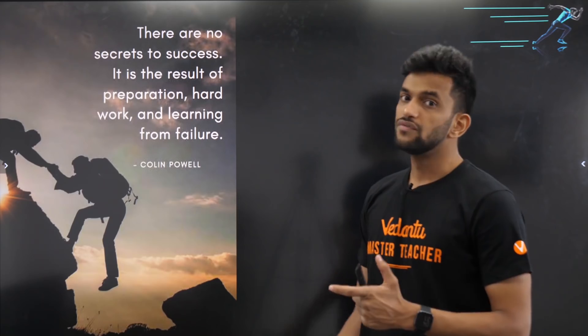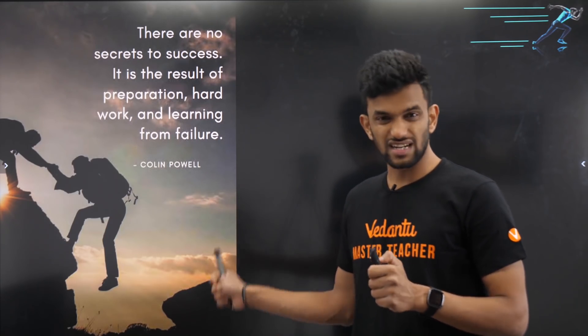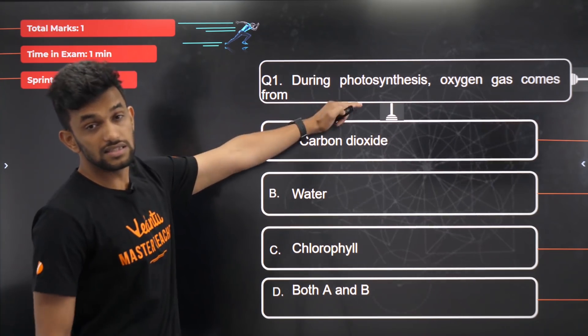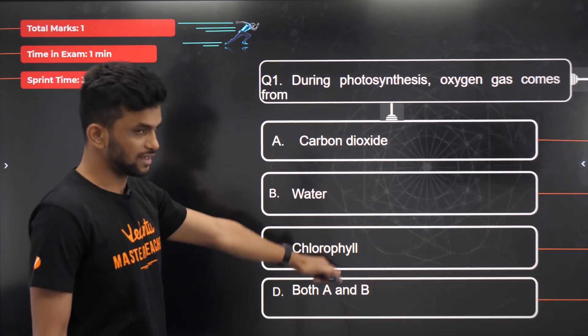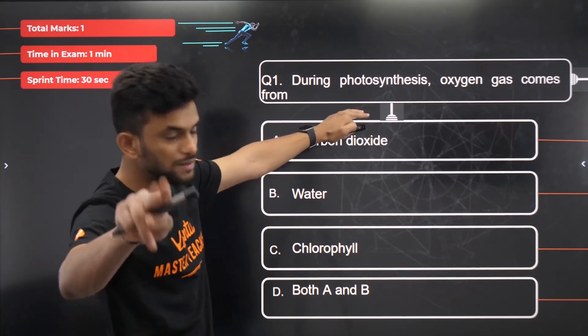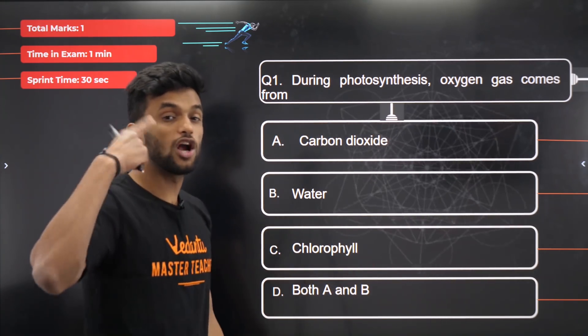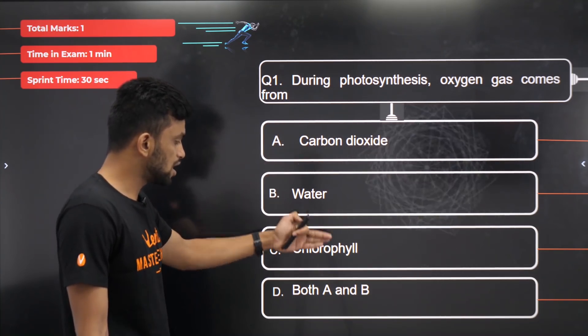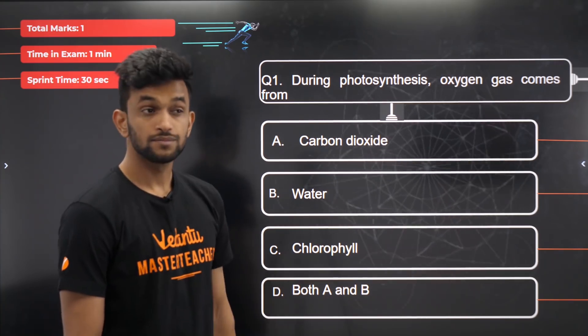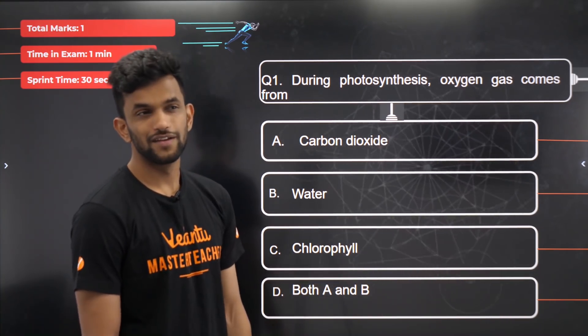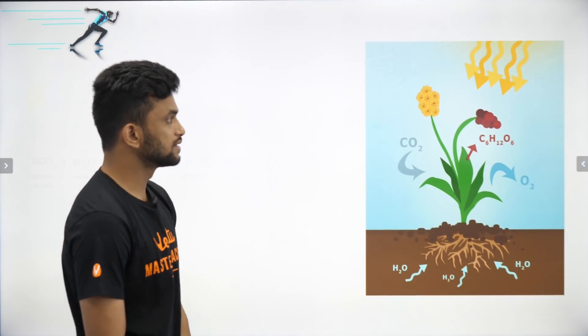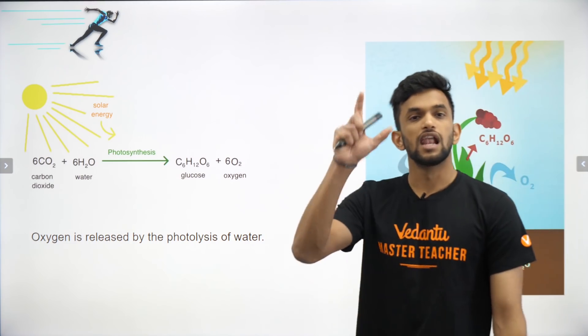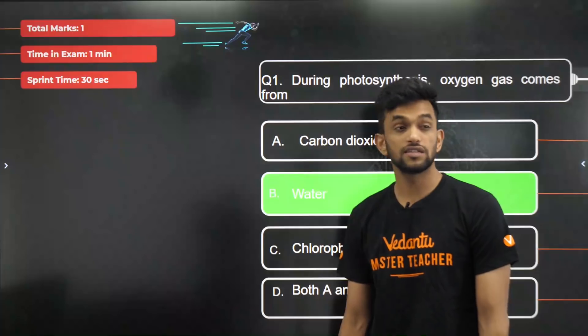Let's start. You need to work hard and have confidence in yourself. Few questions will be multiple choice questions in the beginning. You should not get them wrong. It's just about recognizing the answer. The answer will be in front of your eyes, you just have to recognize. First question: during photosynthesis, oxygen gas comes from carbon dioxide, water, chlorophyll, or both A and B? The answer is photolysis of water. Water is broken down and oxygen is released. Photo means light, lysis means breaking. Light is used to break the water molecule to release oxygen.